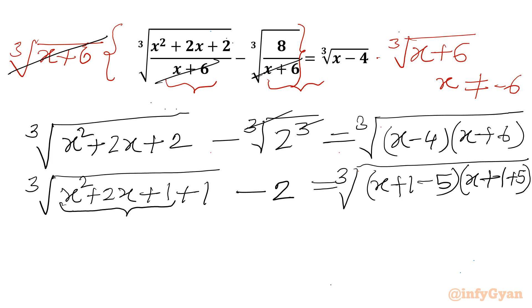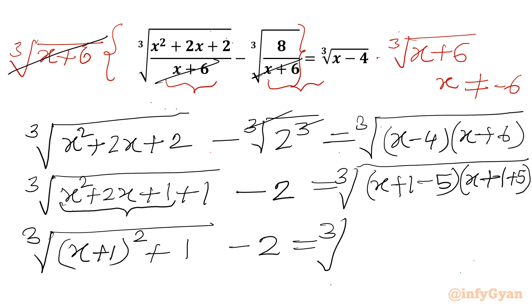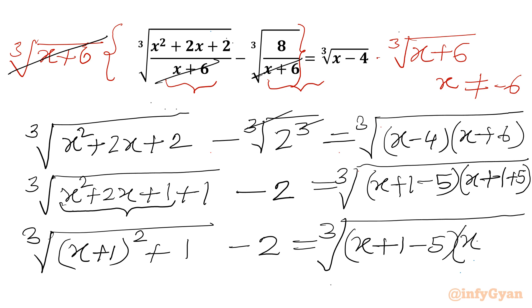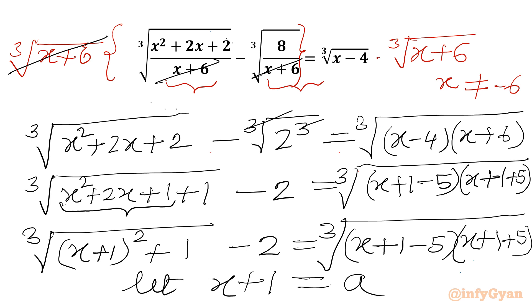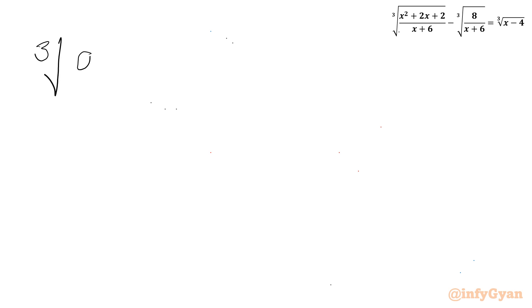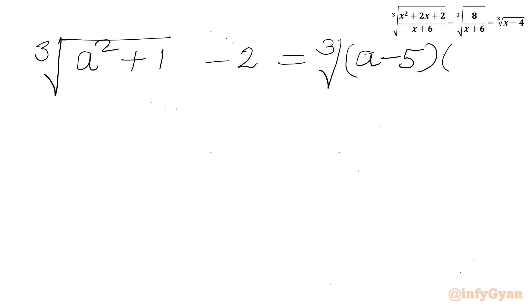Now we can write x² + 2x + 1 as (x + 1)², so we have cube root of (x + 1)² + 1 minus 2 equal to cube root of (x + 1 − 5) times (x + 1 + 5). Let a = x + 1. Then I can write: cube root of a² + 1 minus 2 equal to cube root of (a − 5) times (a + 5).